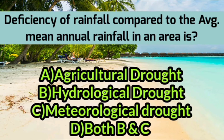The next question asks: deficiency of rainfall compared to the mean annual rainfall in an area is called what kind of drought? The correct option is C — it is called meteorological drought.